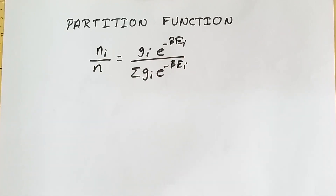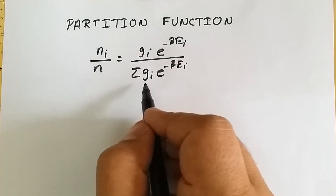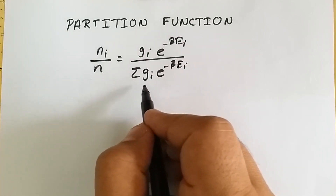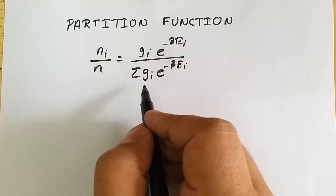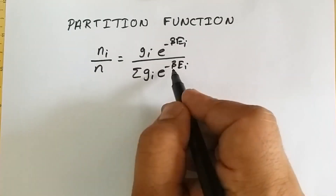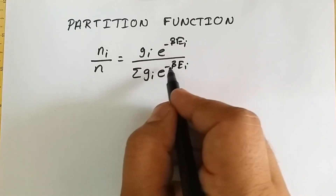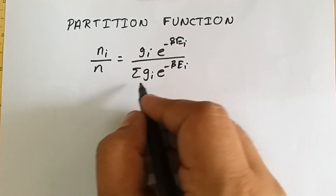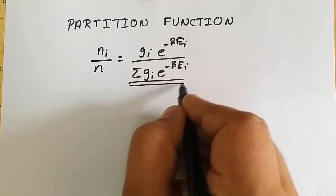Here g_i is the degeneracy of the energy level — the energy states — which I have already explained in Fermi-Dirac statistics as well as in Boltzmann's statistics, whose links you can find in the description. Beta is the constant, and epsilon_i are the energy levels.